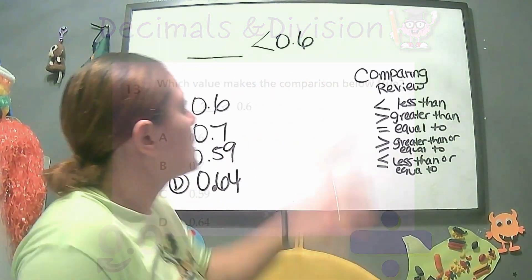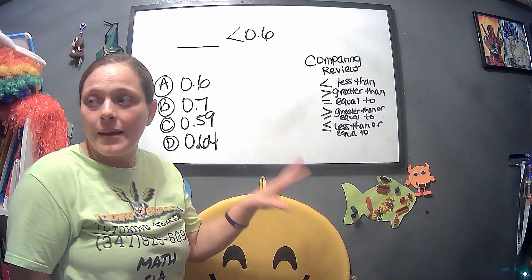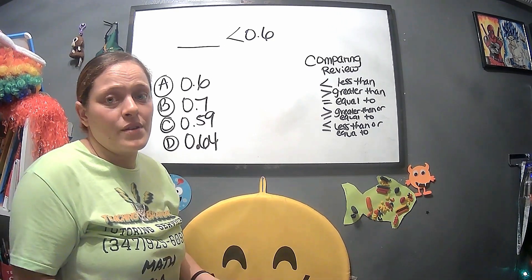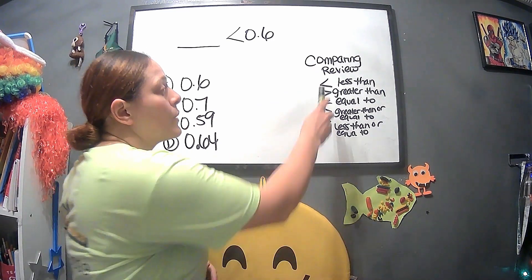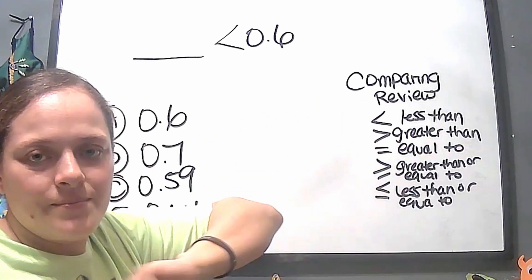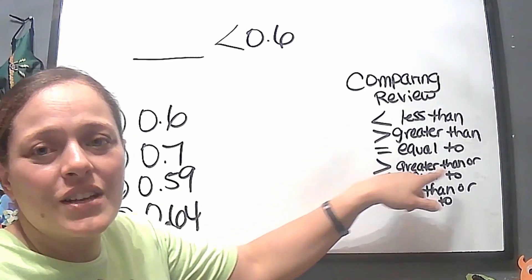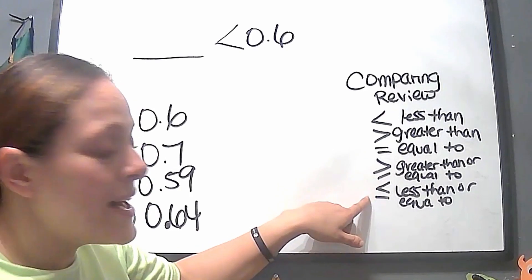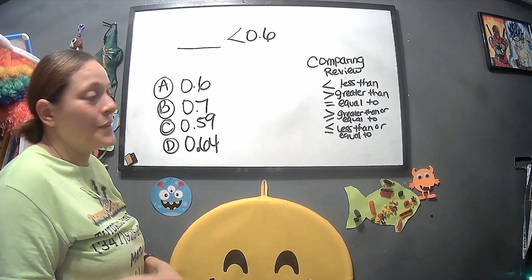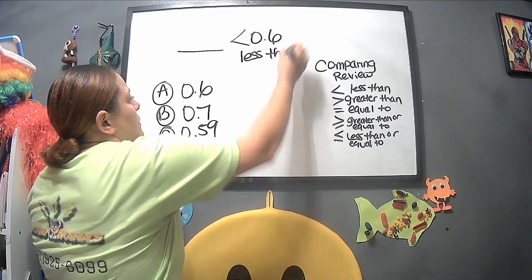Next problem: which value makes the comparison below true? We have a number, a comparison symbol, and a decimal. When it comes to comparisons, it's very important to know the basics because they'll use this for fractions, decimals, mixed fractions — a little bit of everything. The less-than sign looks like an 'L.' Greater than, equal to, greater than or equal to (with line underneath), and less than or equal to (with line underneath). The key is whether or not it has that line underneath.